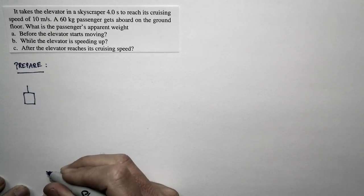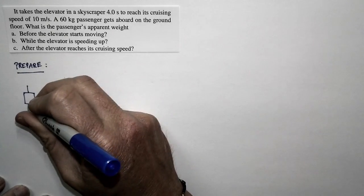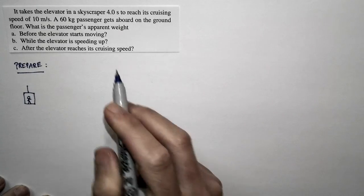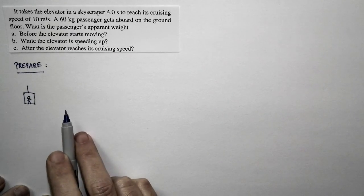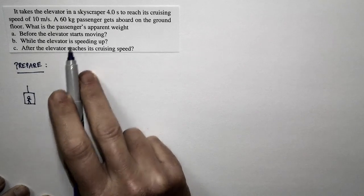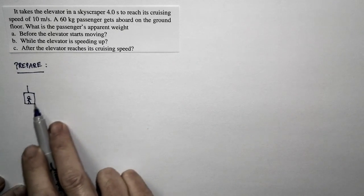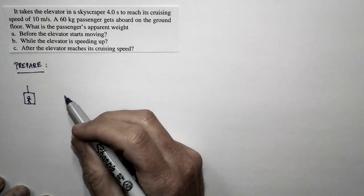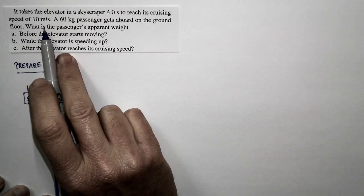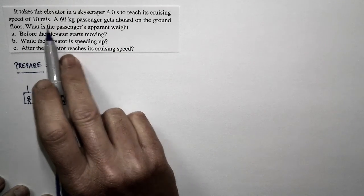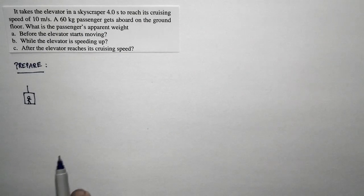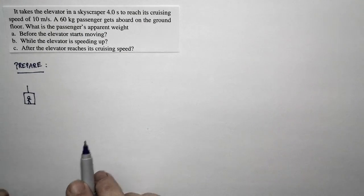We have an elevator pulled upward by a cable, and a person standing inside the elevator. The motion of the passenger is the same as the motion of the elevator — they move together as a unit. So if the elevator takes four seconds to reach its cruising speed of 10 meters per second, so does the passenger.